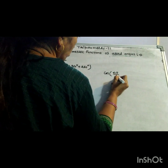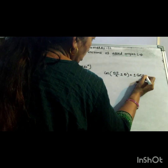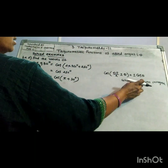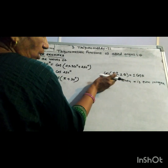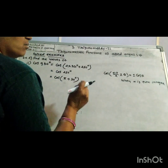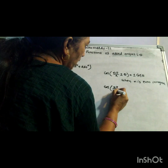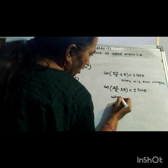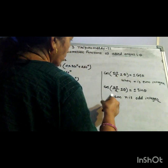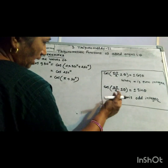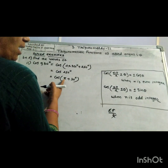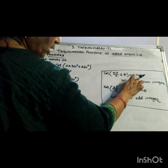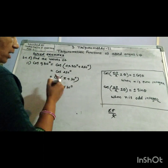Using the allied angle formula: cos(nπ/2 ± θ) = ±cos(θ) when n is even, and ±sin(θ) when n is odd. Here π = 2·(π/2), so n = 2, which is even, therefore the result is cos(30°). But the sign depends on which quadrant the angle lies in.